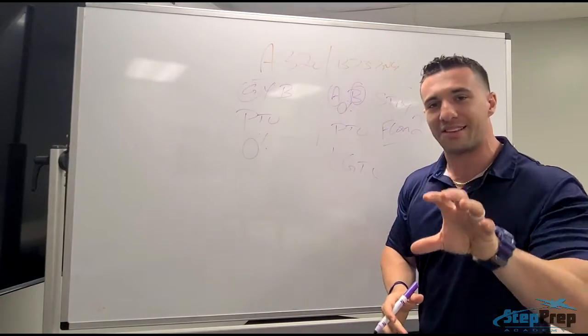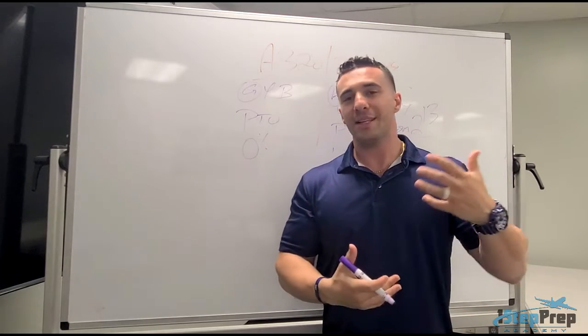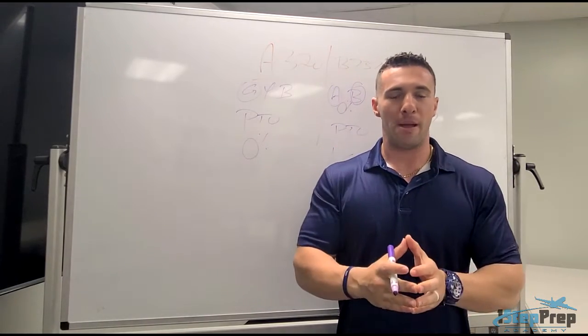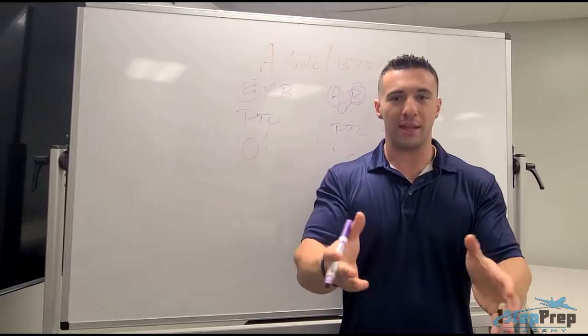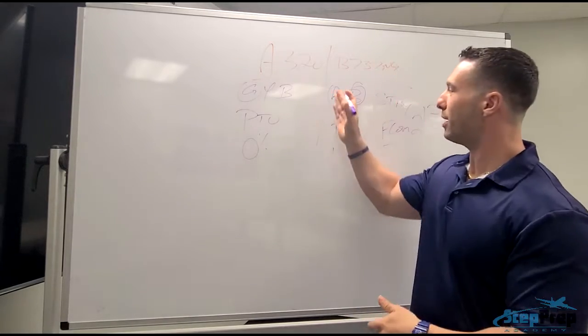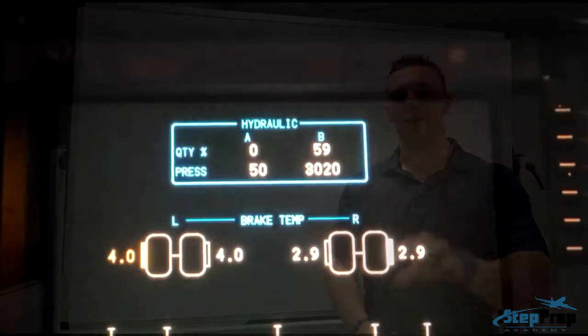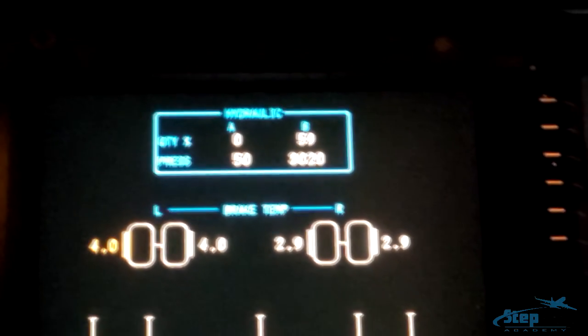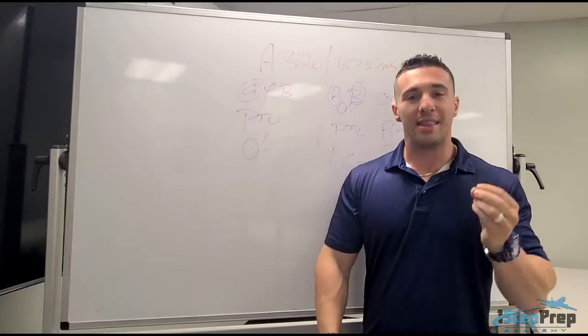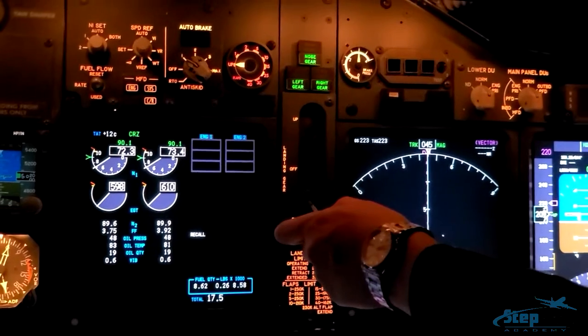So, I was in a sim training a crew, and I wanted to demonstrate this to them. So, what did I do? We failed the A hydraulic system, brought it to zero. We conducted the manual gear extension. You can see here the A system on your screen now. It flew at zero percent.